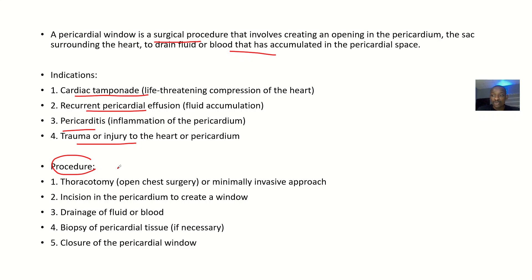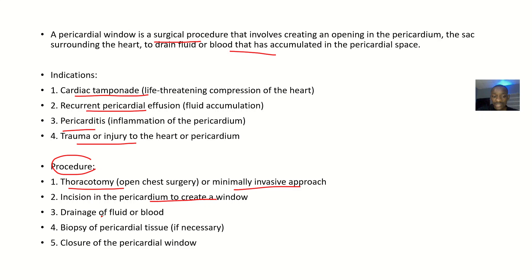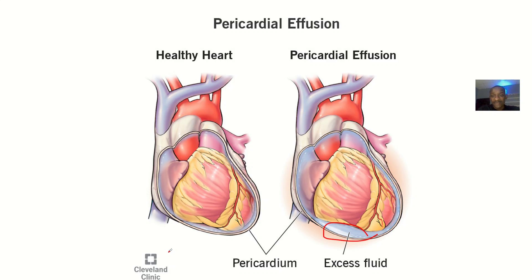The procedure — how do you perform this surgery? You do a thoracotomy, meaning you open the chest. So it's either open surgery or a minimally invasive approach using thoracoscopy. Then you incise into the pericardium to create the window, drain the fluid or blood, and you could do a biopsy of the pericardial tissue and send it for histology. After you are done, you close the pericardial window.